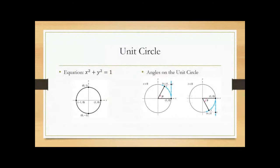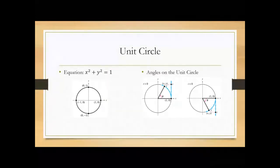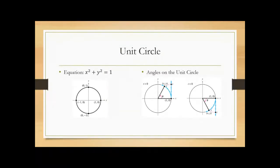Starting with the unit circle: the unit circle is a circle with radius one that is centered at the origin. It's called the unit circle because the radius is one unit. The unit circle is always a circle with radius one.